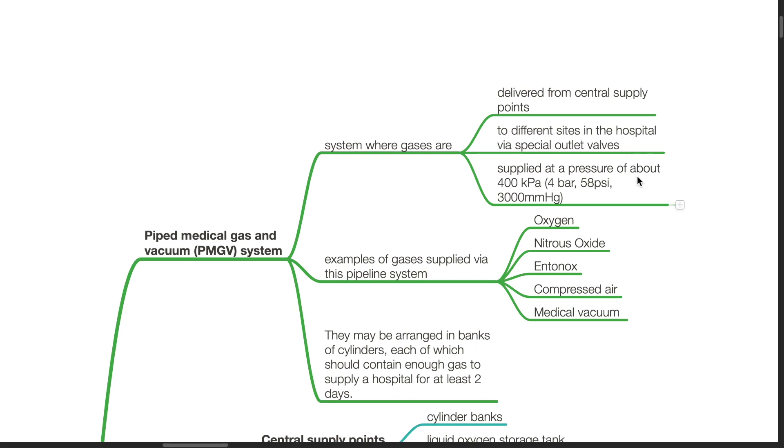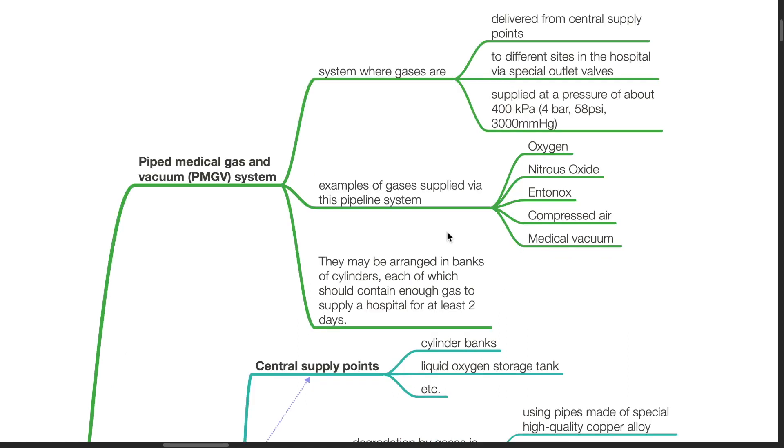Supplied at a pressure of about 400 kPa, which equates to 4 bar, 58 psi, or 3000 mmHg. Examples of gases supplied via this pipeline system include oxygen, nitrous oxide, entonox, compressed air, and medical vacuum. They may be arranged in banks of cylinders, each of which should contain enough gas to supply a hospital for at least 2 days.